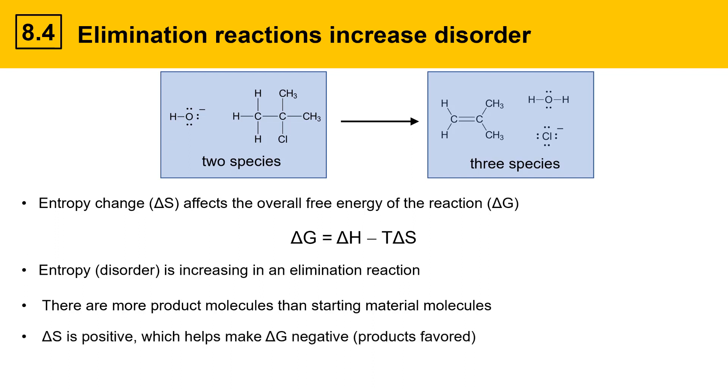Therefore, delta S is positive, which helps make delta G negative and helps favor products. When delta S is a positive value multiplied by a negative T, that gives a negative term, which tends to make delta G negative and helps favor products.